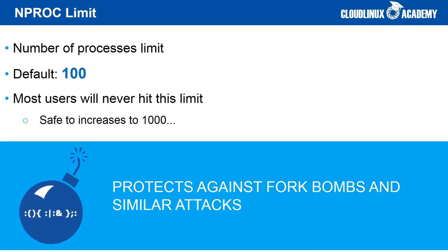nProcs controls the total number of processes within an LVE. Once the limit is reached, no new process can be created until another one dies. The default limit is 100, and it protects against fork bombs and similar attacks. Most users will never hit this limit under normal circumstances. For high-end users you may set it to 200, though it is safe to increase it even to 1000.